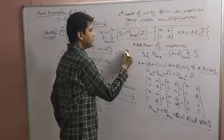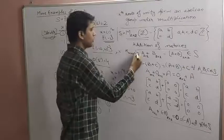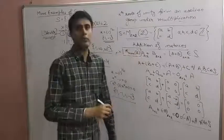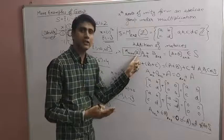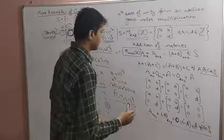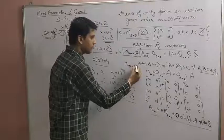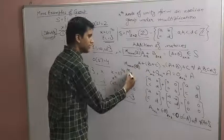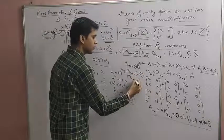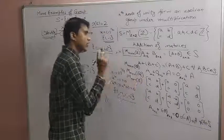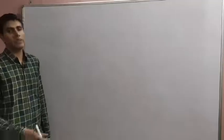The set of all m×n matrices over the integers forms an abelian group under addition. Similarly, the set of all m×n matrices over the rationals, over the reals, or over the complex numbers — all form infinite abelian groups under addition of matrices.